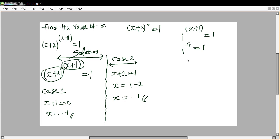If you check, if x equals minus one, that would be (-1+2) raised to power (-1+1). Our answer is one raised to power zero, which is equal to one, and that is the solution. Thank you.